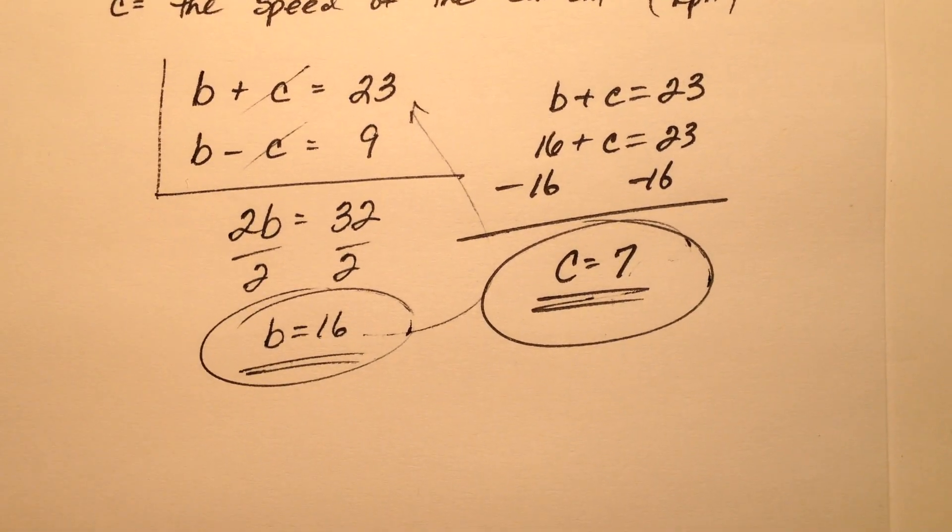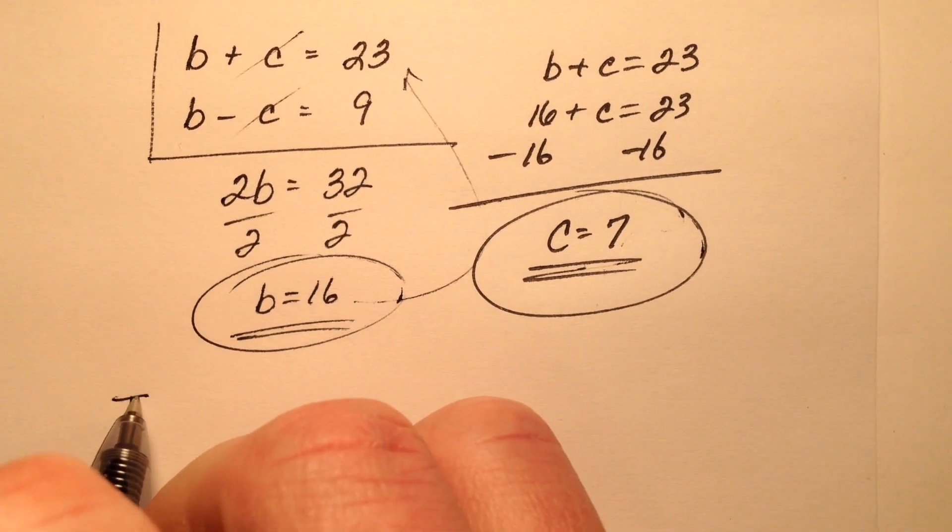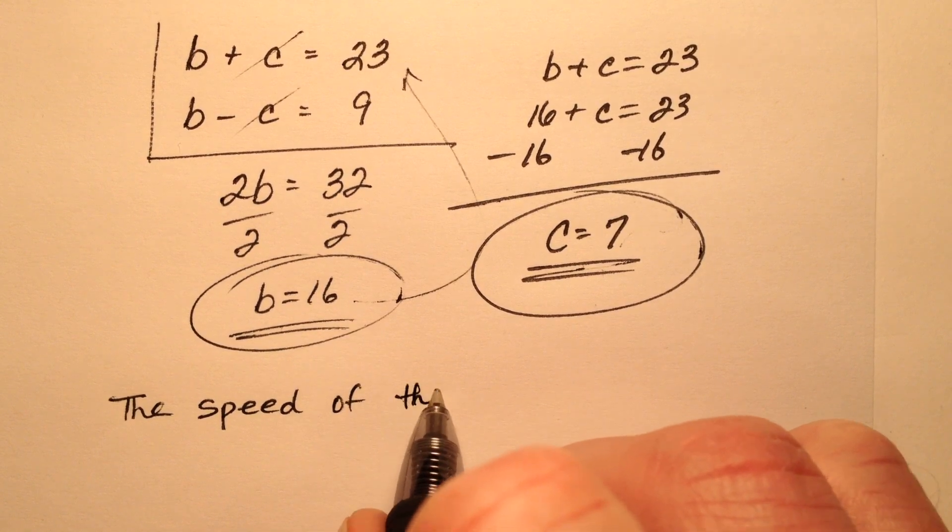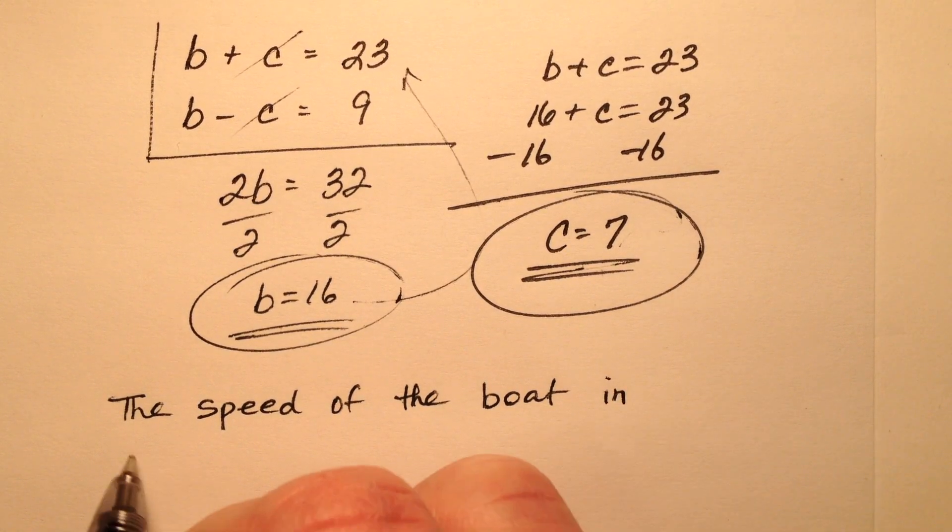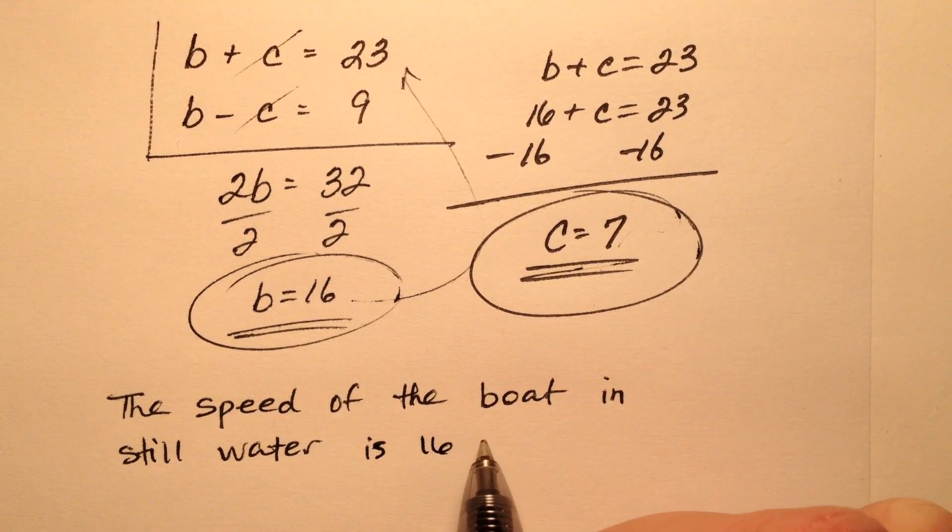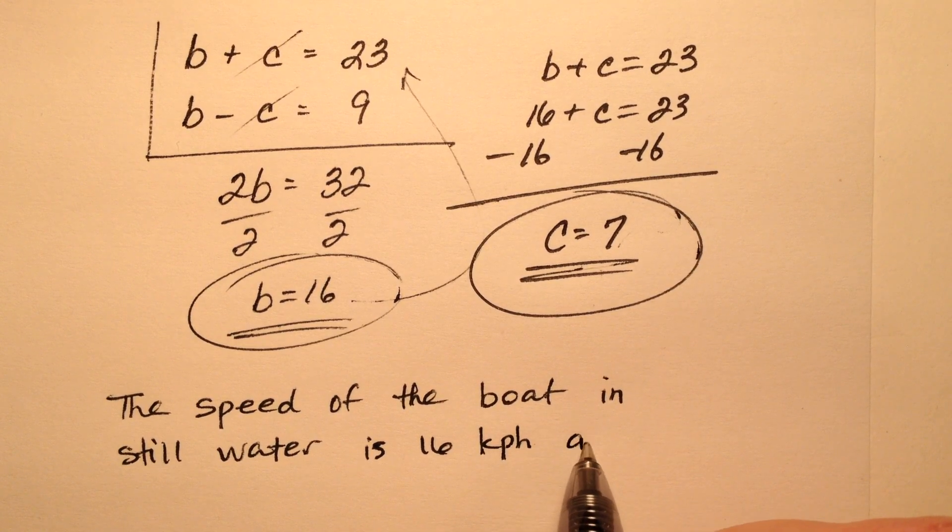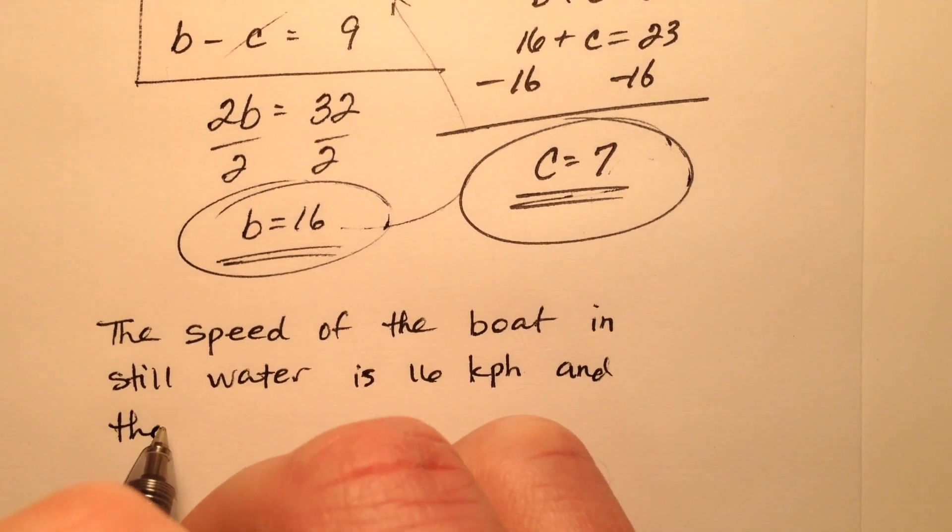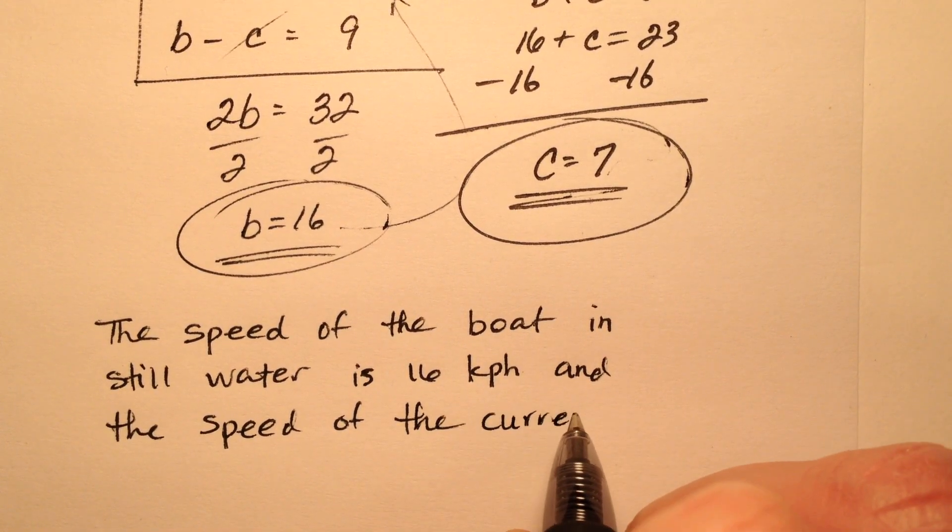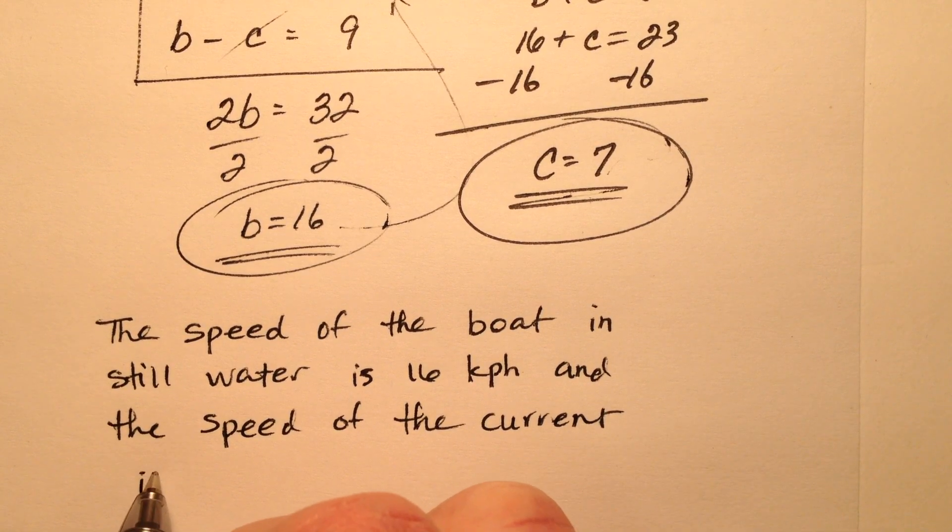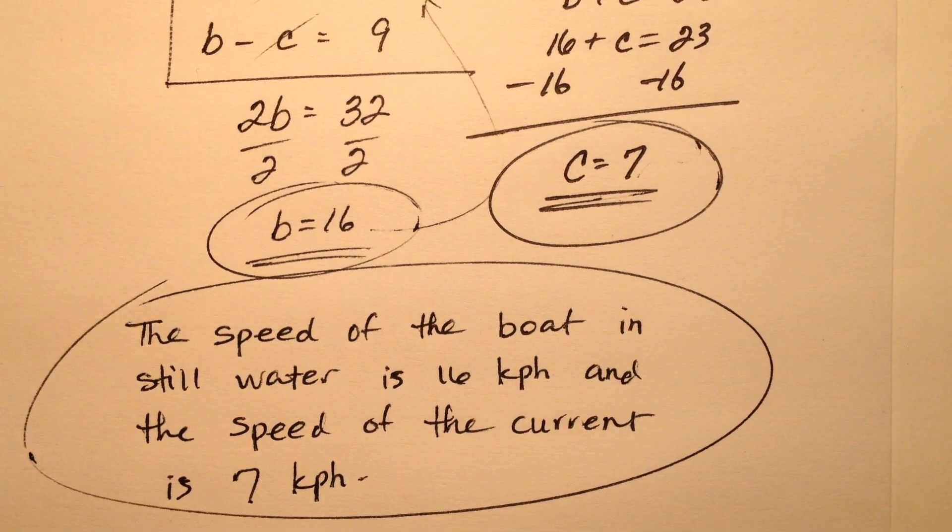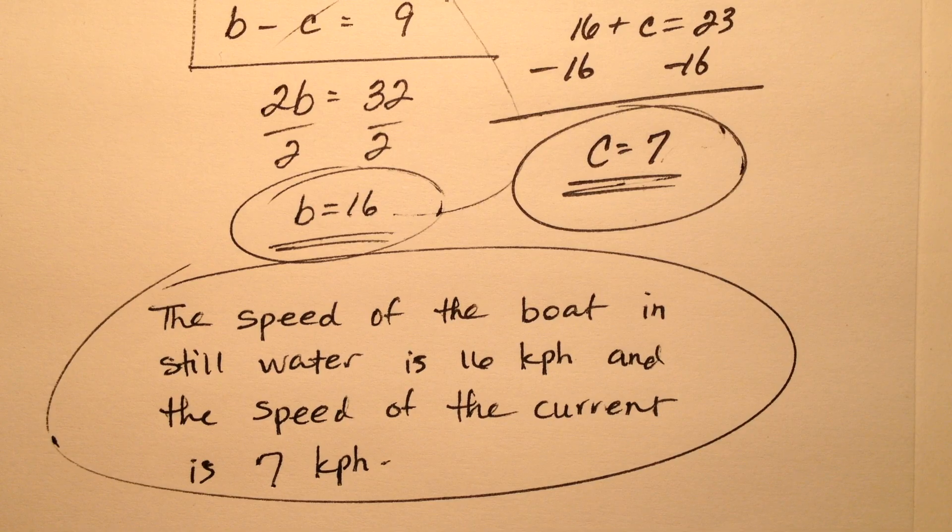That needs to be reflected when I write my sentence. The speed of the boat in still water is 16 kilometers per hour, and the speed of the current is 7 kilometers per hour.